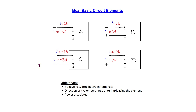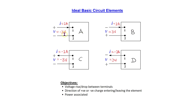Hello everyone. In this video, we will analyze four ideal basic circuit elements in terms of the voltage rise and drop between the terminals, the direction of the positive or negative charge, and the power associated with the circuit element. Recall that an ideal basic circuit element is described solely in terms of the relationship between its voltage and current. An ideal basic circuit element cannot be subdivided into simpler elements, and it has two terminals to connect it to other circuit elements.